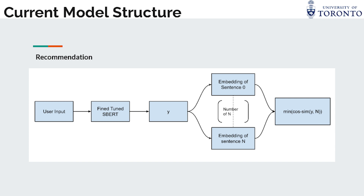To achieve recommendations after fine-tuning our model, user input queries are encoded using our model and compared to the embedding space of movies. Minimization of cosine similarity is used again here.